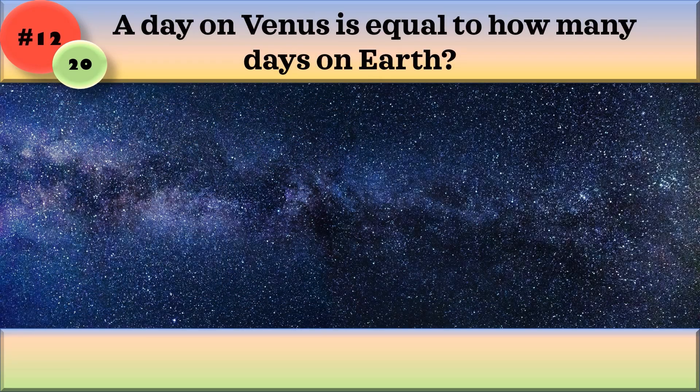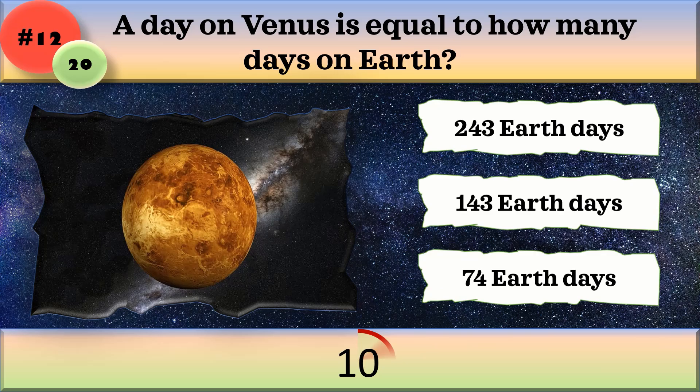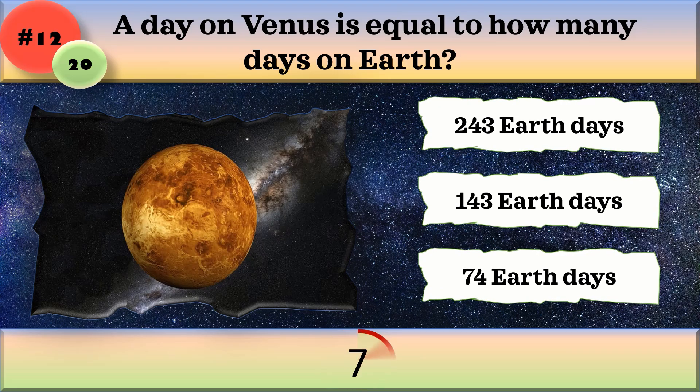A day on Venus is equal to how many days on Earth? 243, 143, or 74 Earth days?